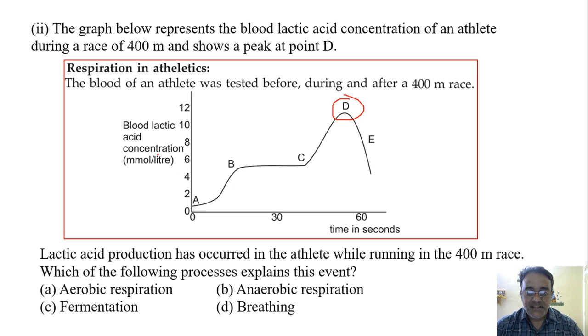The question is: lactic acid production has occurred in the athlete while running in the 400 meter race. Which of the following processes explains this event? The four options are: aerobic respiration, anaerobic respiration, fermentation, and breathing.